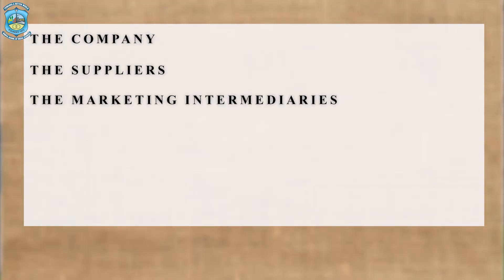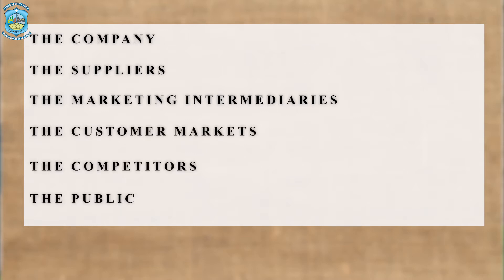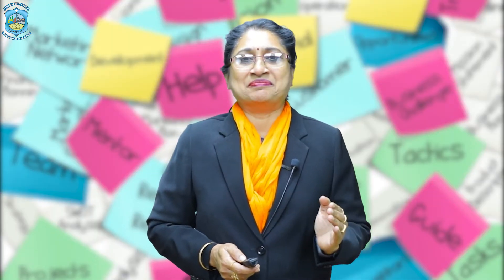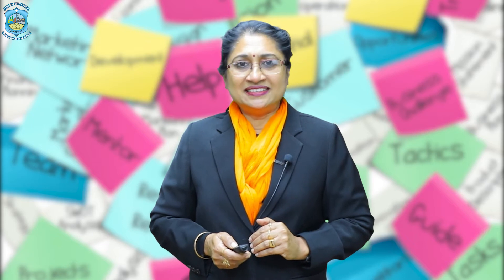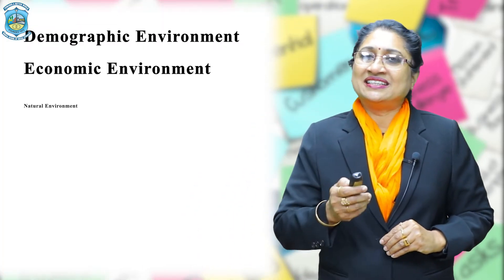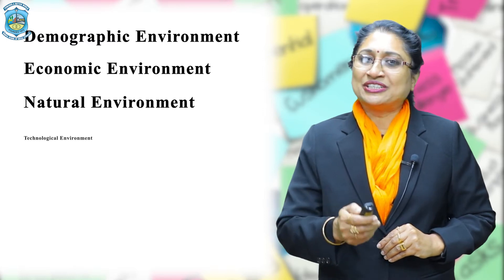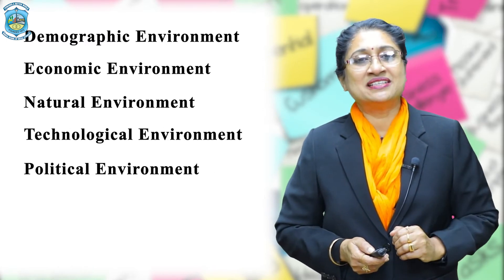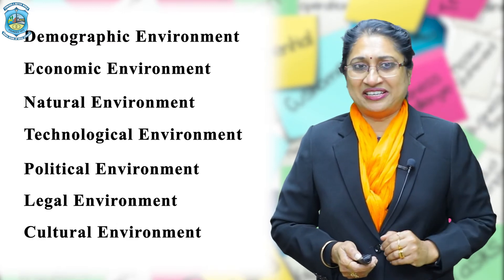The micro environment consists of the company, the suppliers, the marketing intermediaries, the customer markets, the competitors and the public. On the other hand, the macro environment consists of larger societal forces that affect the micro environment, and these forces are the demographic environment, economic environment, natural environment, technological environment, political environment, legal environment and cultural environment.